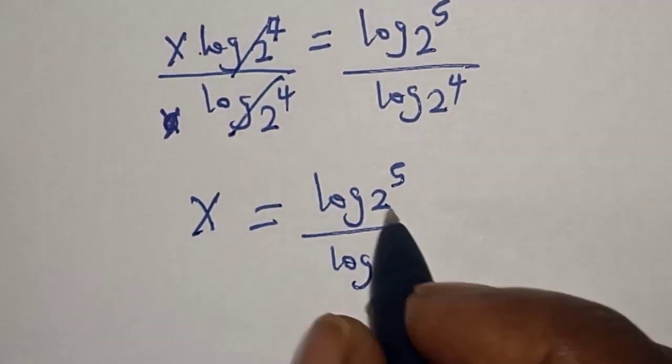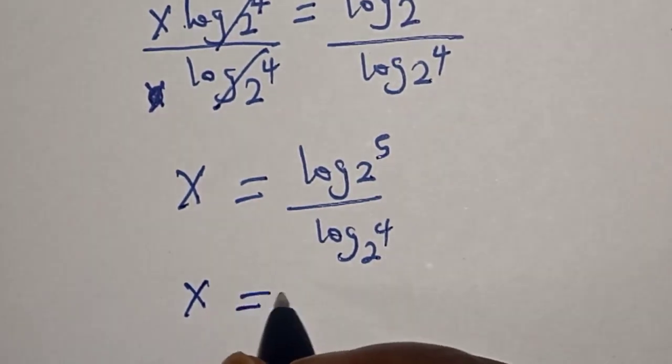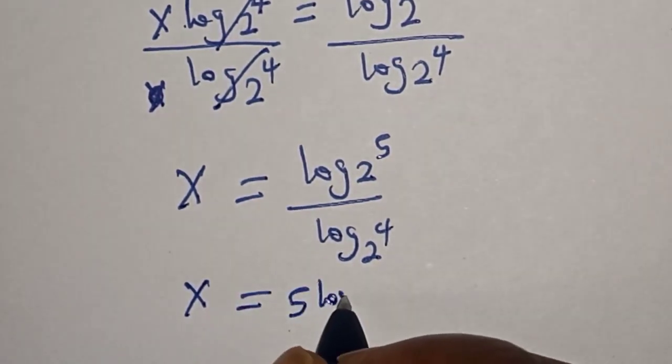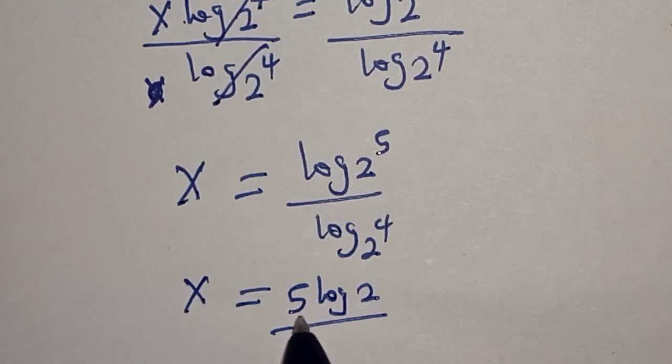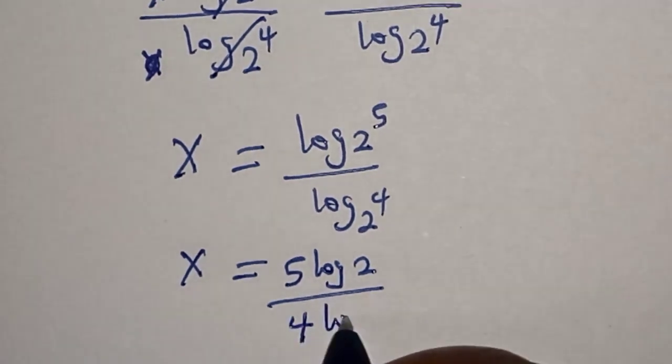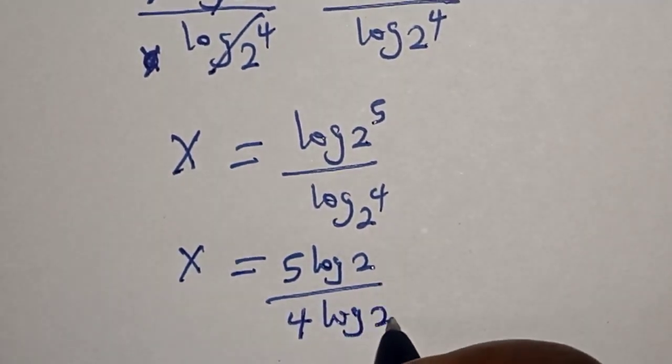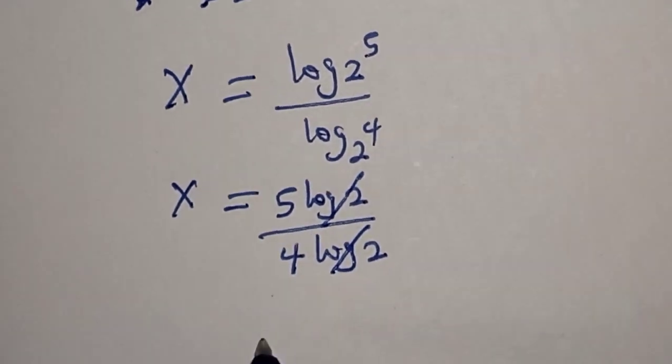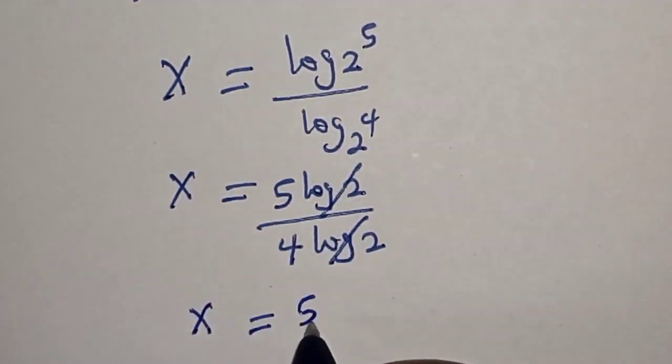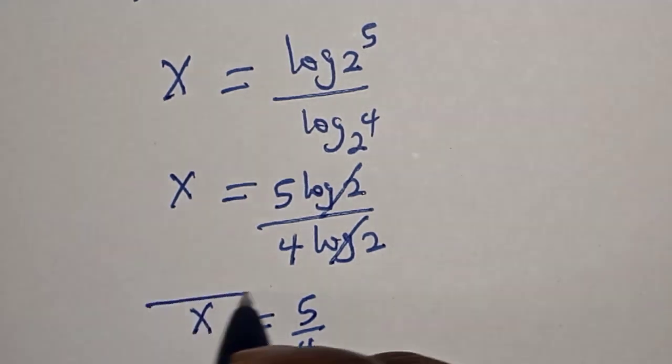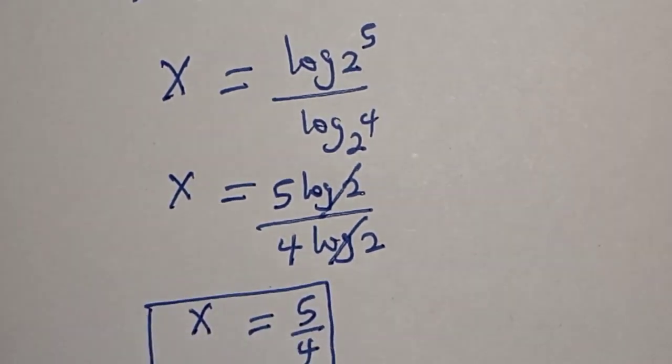Then s is equal to 5 log 2 over 4 log 2. This one will cancel. s is equal to 5 over 4, and that is our final answer.